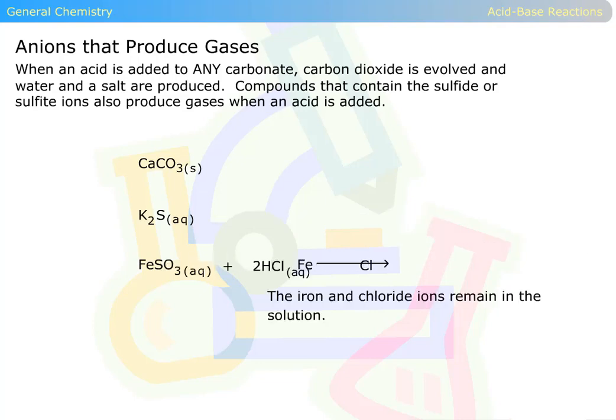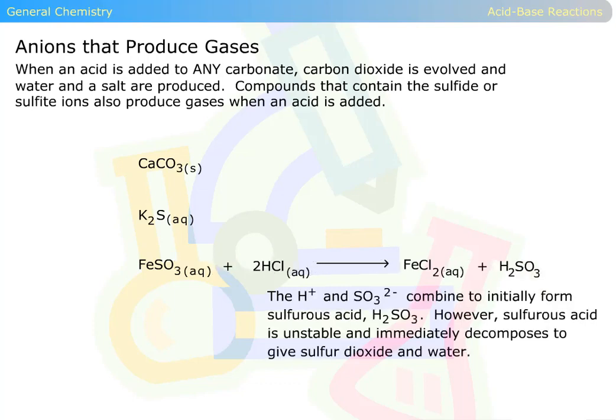In this case, the iron and chloride ions remain in the solution. Finally, the H+ and SO3 2- ions combine to initially form sulfurous acid, H2SO3. However, sulfurous acid is unstable and immediately decomposes to give sulfur dioxide and water. The sulfur dioxide is evolved as a gas.